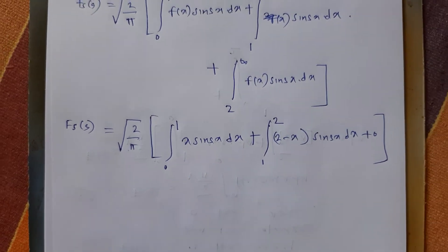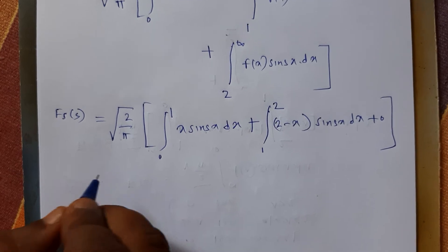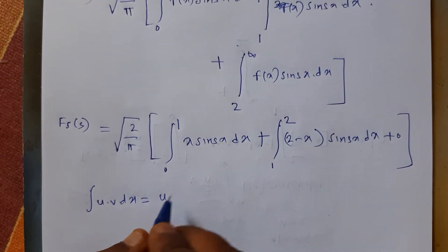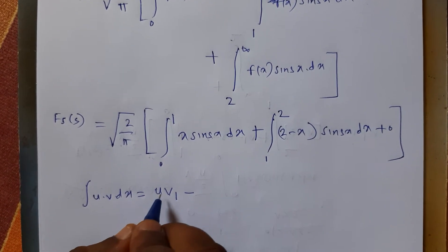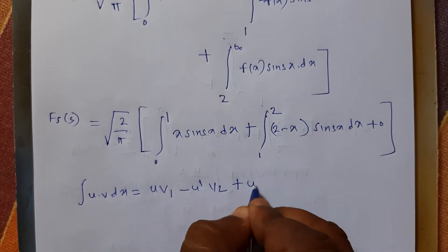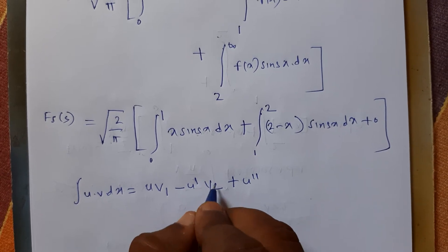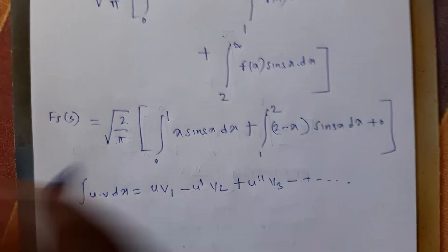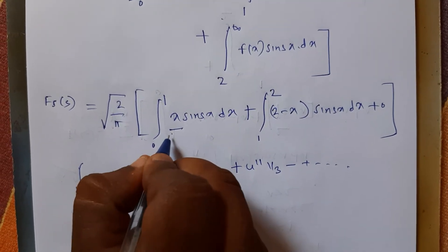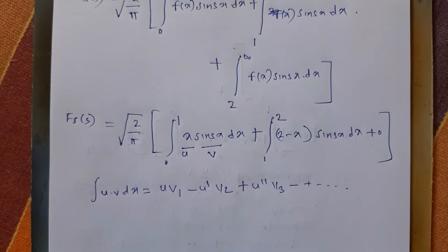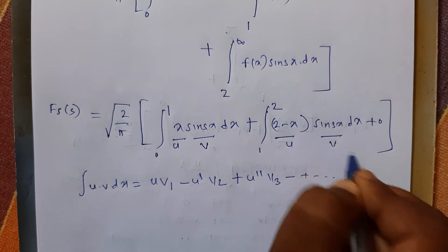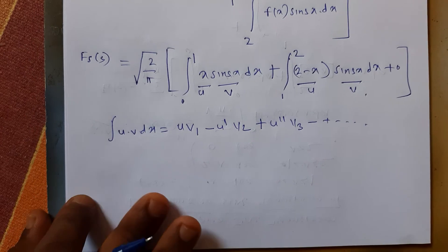Now I will integrate these two terms with respect to x using generalized integration by parts. The formula is: integral of u·v dx equals u times v₁ minus u' times v₂ plus u'' times v₃, minus/plus up to infinity. I have applied the LIATE rule. In the first term, u is x and v is sine(sx); in the second term, u is (2 minus x) and v is sine(sx).